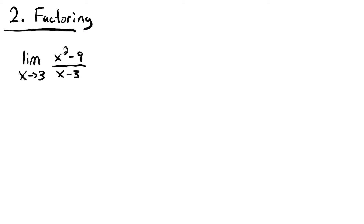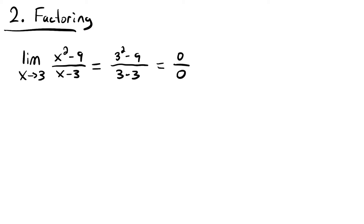Next, we look at our factoring method, which is useful when terms in the function can be factored to simplify it. But first, let's see why we even need it. If we plug 3 into the limit as x approaches 3 of (x squared minus 9) all over (x minus 3), we get 3 minus 3 on the bottom, and 9 minus 9 on the top — zero over zero. This is an undefined, indeterminate form; we cannot determine the limit in its current state.